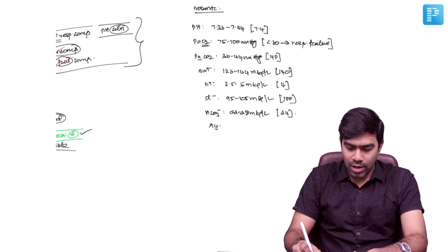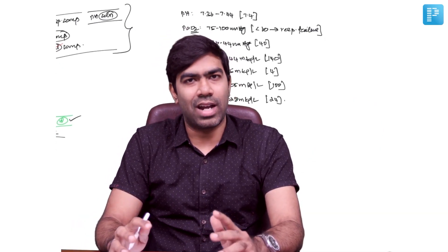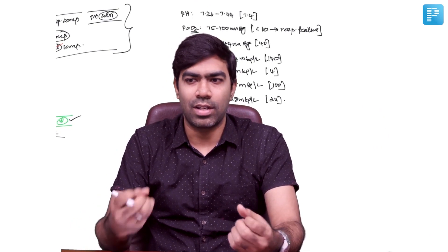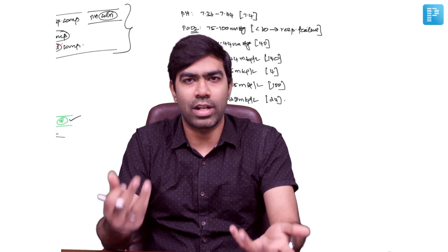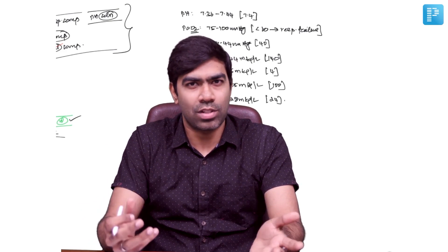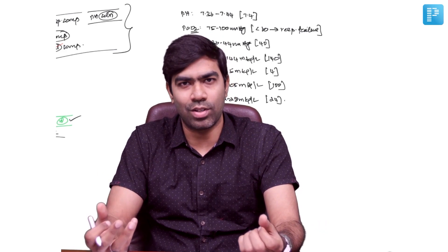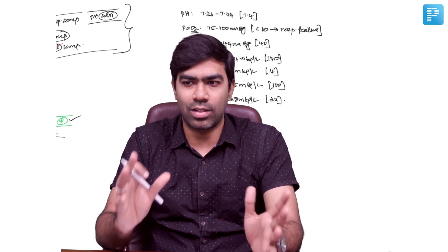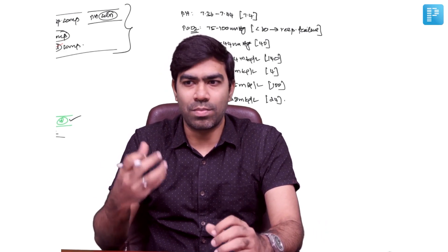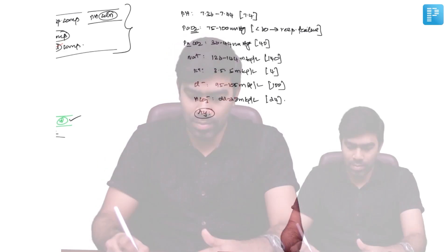Coming to the concept of anion gap — we have a separate discussion on this — anion gap is the sum of unmeasured cations and anions. In the body, you cannot have a difference in cations and anions. The sum of positive charges should be equivalent to the sum of negative charges, so the net charge of your body is actually zero — it's neutral. But anion gap is a kind of a misnomer, because we miss out on some cations and anions in the calculation.